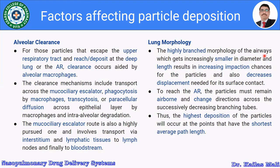Regarding lung morphology, the highly branched morphology of the airways, which gets increasingly smaller in diameter and length, results in increasing impaction chances for particles and also decreases the displacement needed for surface contact. To reach the alveolar region, the particle must remain airborne and change direction across successively decreasing branching tubes. The highest deposition of particles will occur at points that have the shortest average path length.